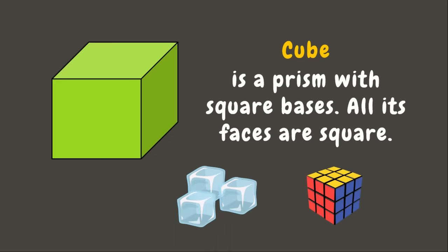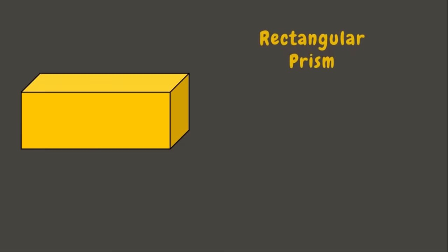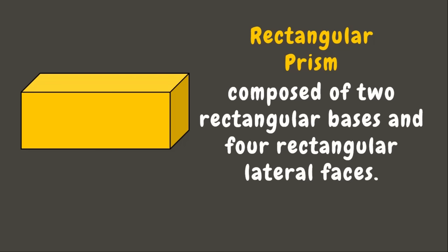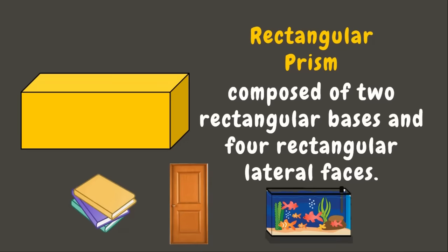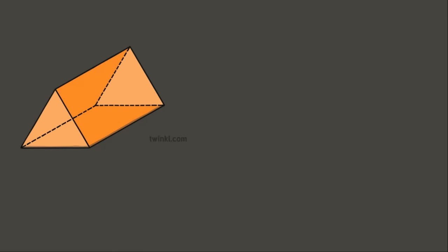Examples of cube objects are a Rubik's cube, ice cubes, and a box. Next, we have a rectangular prism. A rectangular prism is composed of two rectangular bases and four rectangular lateral faces. Examples of rectangular prisms are a book, a door, and an aquarium.